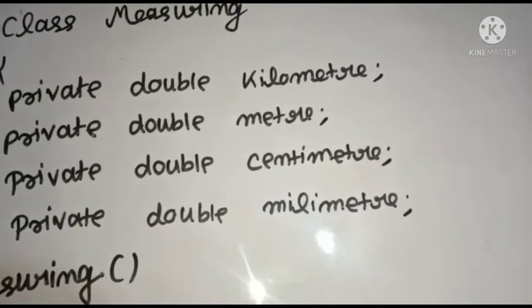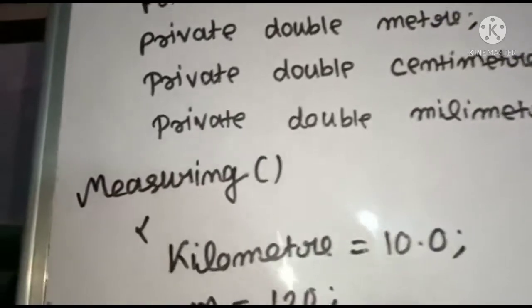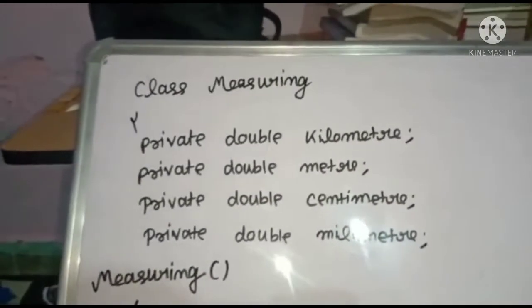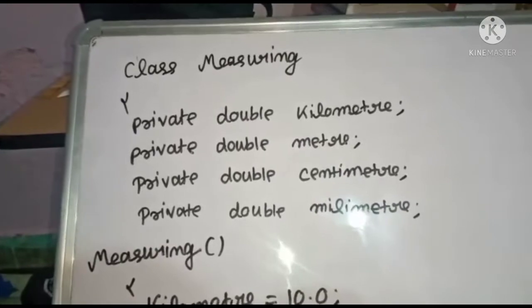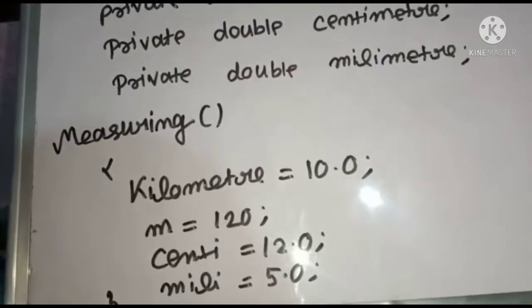We have declared four values that is kilometer, meter, centimeter and millimeter. Then this measuring is the constructor. I have told you that the name of the constructor will be same as that of the class. So measuring will be the constructor.